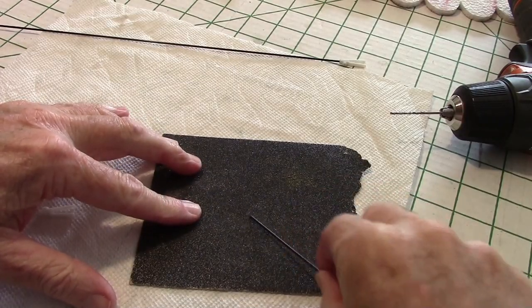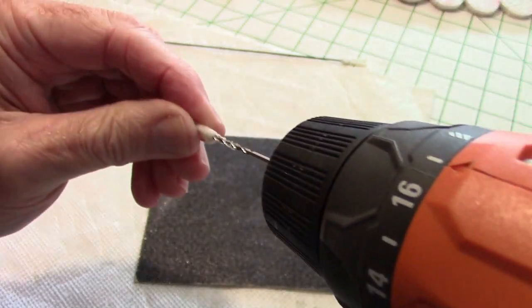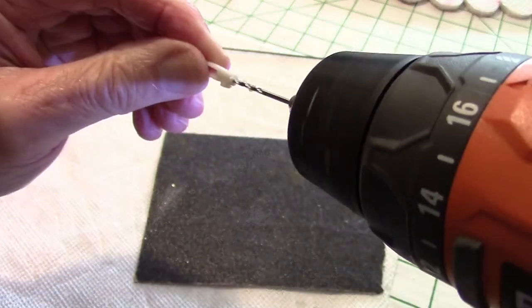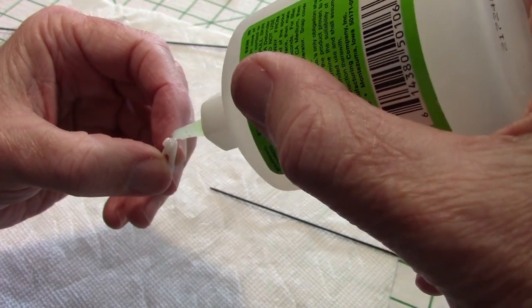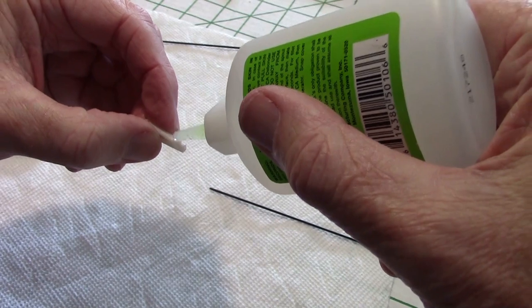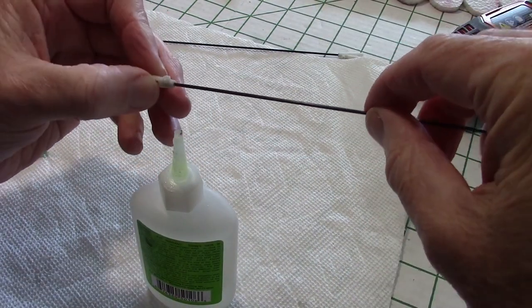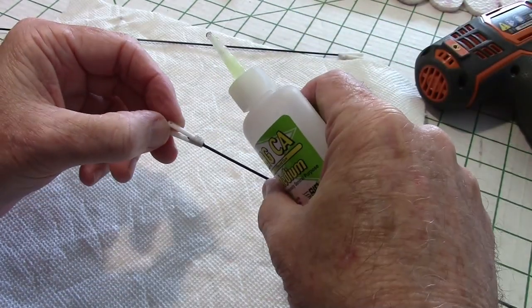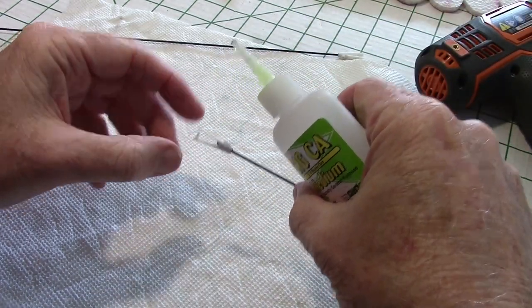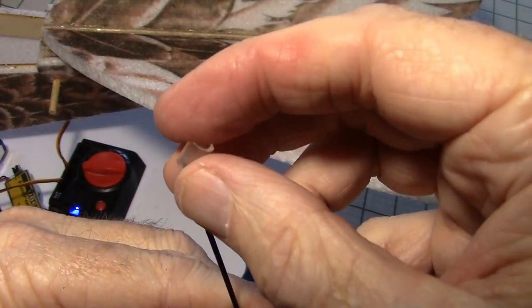Now let's sand the control rods for the V-tail and also drill out the clevises to accept the control rods. Then we can apply some CA glue, this is medium CA, to the clevis and insert the control rod. You can also add a little to the side hole and a little on the end if you want to. Then just let it dry.